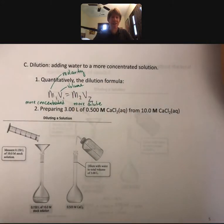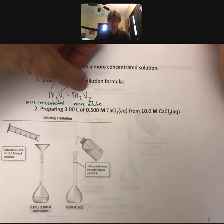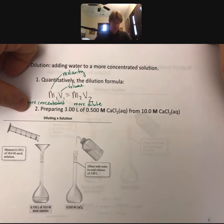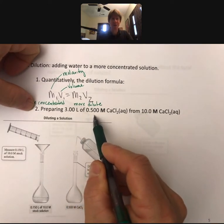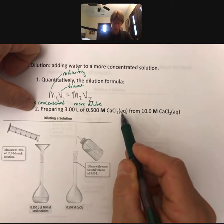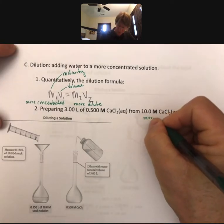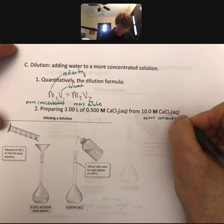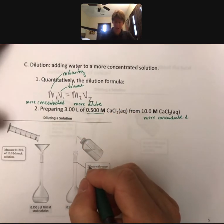But that's just to keep myself organized. The math doesn't care which way you do it, as long as you keep the more concentrated things together and the more dilute things together. For example, if I was preparing 3.00 liters of 0.500 molar calcium chloride solution from 10.0 molar calcium chloride, this is our more concentrated solution, and this, because it's got a lower molarity, is our more dilute solution.